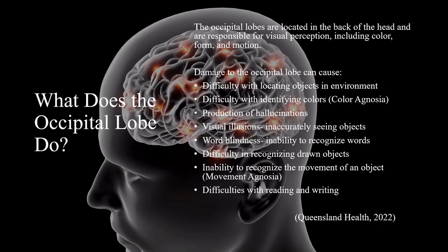The occipital lobes are located in the back of the head and are responsible for visual perception, including color, form, and motion. Damage to the occipital lobe can cause difficulty with locating objects in the environment.